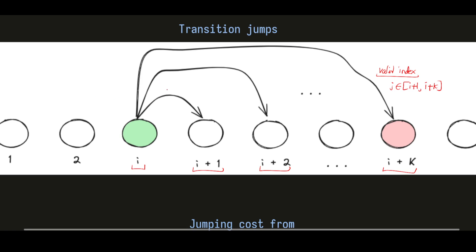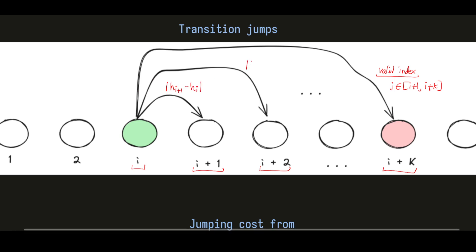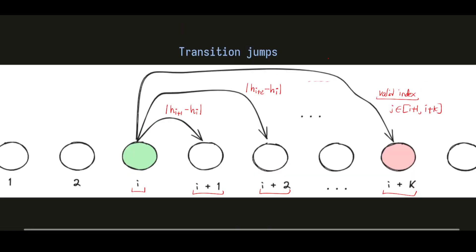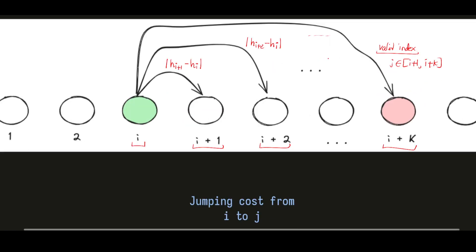There are individual costs incurred for each jump. The cost would be the absolute difference between h of i and h of j, and similarly for the rest of the jumps. These are the transitions and choices available to the frog.